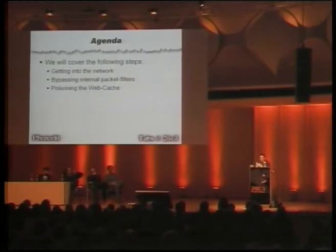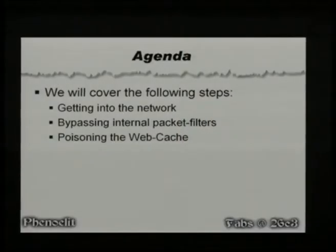We're going to show how you get into the network, and once you are in the network, before you can work all your layer 2 tricks, you'll probably have to bypass one filter or two, because just being in the network doesn't mean being in the network. You can land in different locations and possibly you cannot reach the services that you want to compromise. In the end, we will show how you can poison the Squid web cache in an attempt to control the entire HTTP traffic in the network.